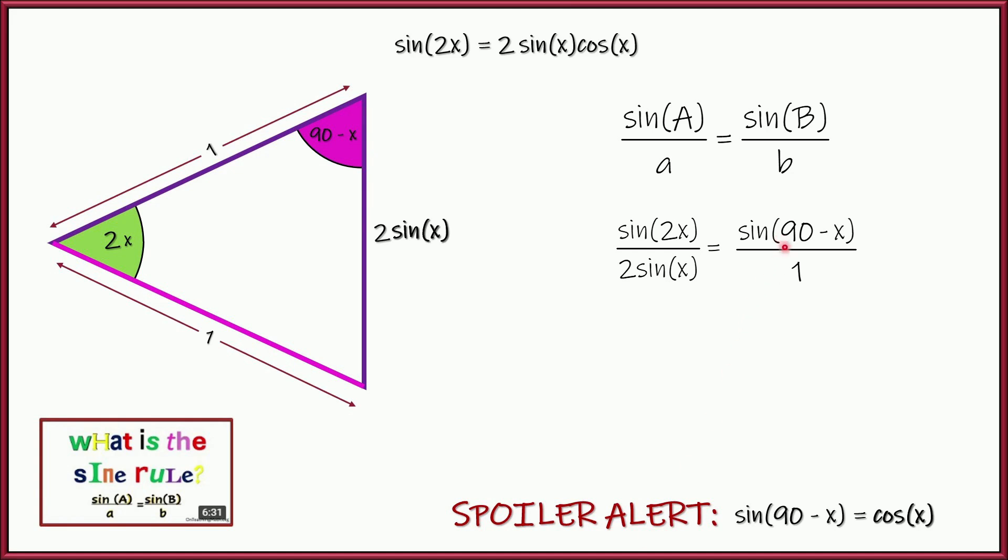Right? And here's where we're going to use this identity right here. Sine of 90 minus x is just cosine of x. So let's substitute that. And dividing by 1, we can clean that up. Right?